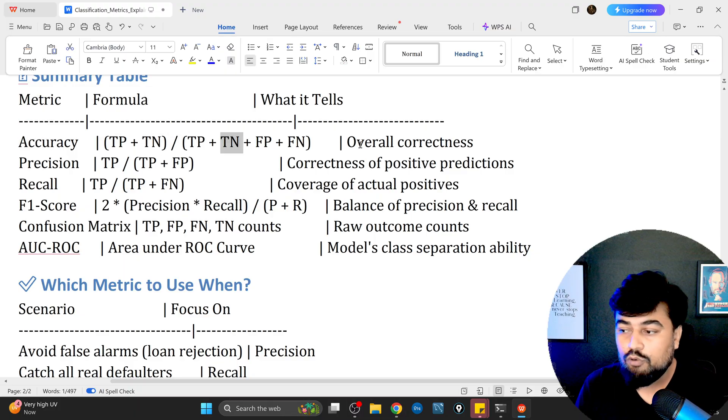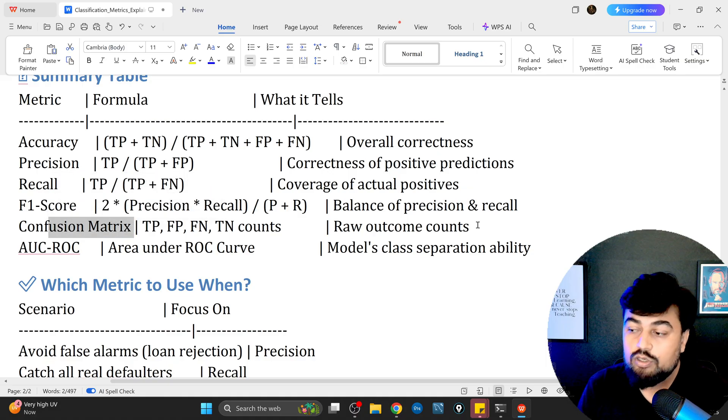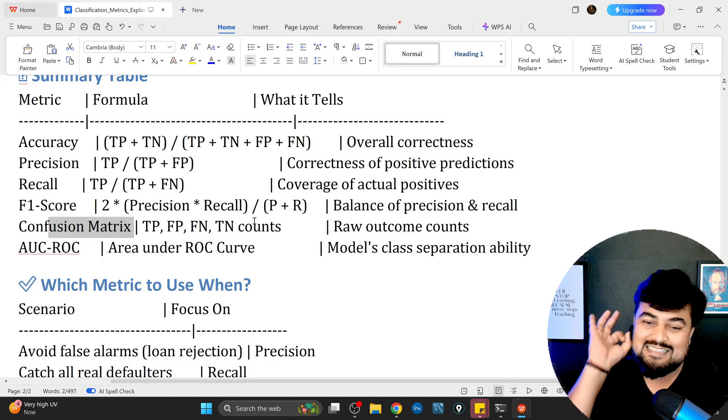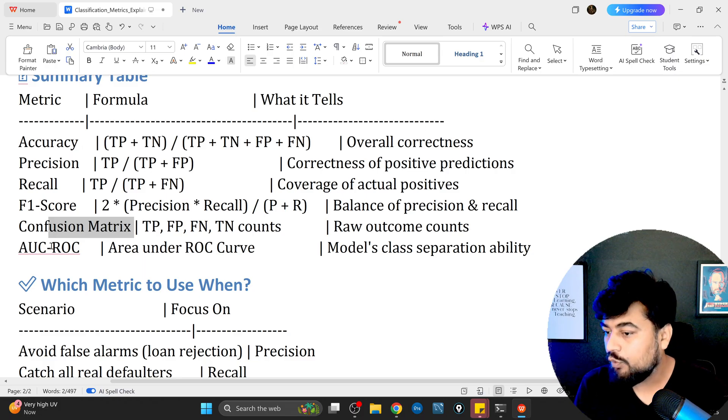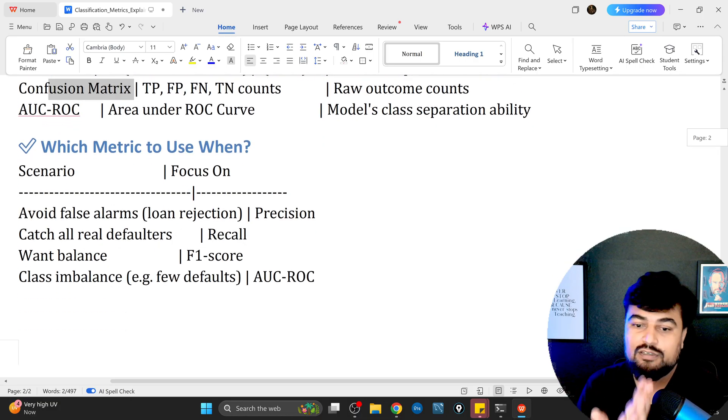Accuracy tells about overall correctness. Precision talks about correctness of positive predictions. Recall is coverage of actual positives. F1 score is the balance of precision and recall. Confusion matrix was the first metric showing raw outcome counts. Without confusion matrix it's all zero. AUC ROC curve shows model class separation ability, how good the model is in separation of good versus bad, default versus non-default.